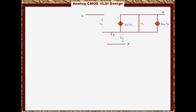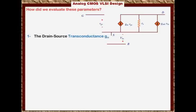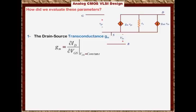The question is: what are these parameters, and how do we evaluate them? Let's look at the first parameter, which is the drain-source transconductance G_M. We define G_M as the partial derivative of I_D with respect to V_GS, keeping V_DS constant. So G_M tells you how much the current changes for a given change in V_GS — it is the transconductance.